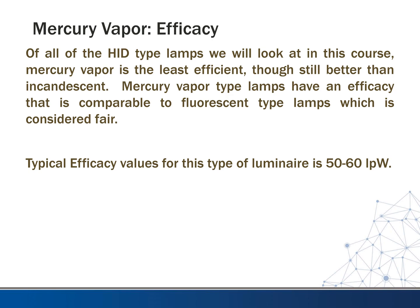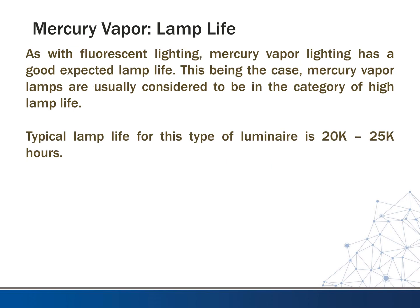With mercury vapor, of all the HID type lamps we're going to look at in this course, mercury vapor is the least efficient, though still better than incandescent. Mercury vapor type lamps have an efficacy that is comparable to fluorescent type lamps, which is considered fair. We usually see these in the range of 50 to 60 lumens per watt. As with fluorescent lighting, mercury vapor lighting has a good expected lamp life — mercury vapor lamps are considered high lamp life, going anywhere from 20,000 to 25,000 hours of use.